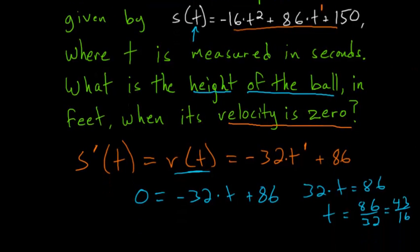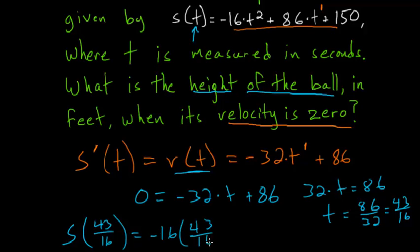We need to compute s(43/16). So we have -16 times this quantity, 43/16 squared, plus 86 times 43/16, and then plus 150.